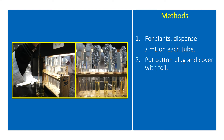For NA slants, dispense 7 ml of NA media per test tube using a 10 ml pipette. Put the cotton plug and cover with aluminum foil. Do the same thing with the nutrient broth media.